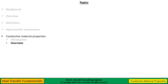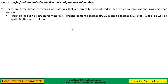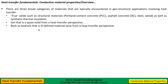Moving on to an overview of conductive material properties. There are three broad categories of materials we typically deal with in geostructural applications involving heat transfer. We have what I call true solids — typically structural materials such as Portland cement concrete, asphalt concrete, steel, and wood, as well as synthetic thermal insulation. We have soil, which is a quasi-solid from a heat transfer perspective. And we have rock as it occurs as bedrock, which can be an ill-defined material from a heat transfer perspective.